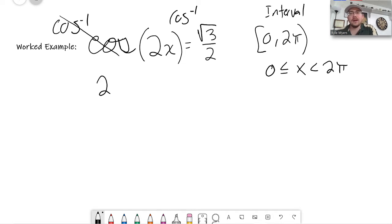I have 2x is equal to the cosine inverse of root 3 over 2. Now, I know what the interval for x is, but in order to figure out what the answer is here, I need to figure out what the interval for 2x is. I need all the answers of 2x, not just x. I have the interval for x. Well, if I treat this like an equation, and it kind of is, it's an inequality,